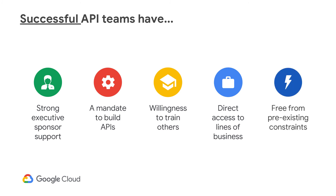Finally, the API team should be free from pre-existing constraints. As we mentioned before, the API team should strive on innovation and not be constrained by outdated governance models or processes. In the world of APIs, time to market is critical, so welcome change rather than trying to fit it within an insufficient process.